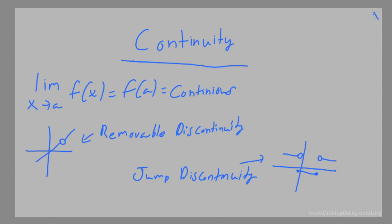One of the biggest things in continuity is that as the limit of x goes to a, f(x) should equal f(a). So if there's a graph at x equals 2, there should be a filled-in circle at x equals 2. There shouldn't be a hollow circle or any type of discontinuity. Whenever you have a hollow circle, that's called a removable discontinuity — that's when the function isn't continuous over that interval.